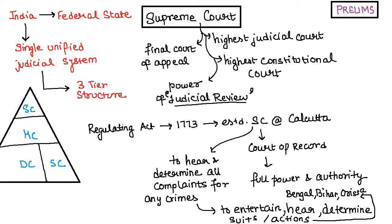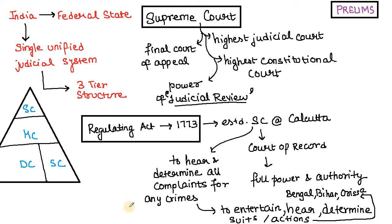When we talk about the historical background of the Supreme Court, the Regulating Act of 1773 was passed and it established the Supreme Court of Judicature at Calcutta as a Court of Record. It was established to hear and determine all suits and actions in Bengal, Bihar, and Orissa — you can use the mnemonic B-O-B to remember: Bengal, Orissa, Bihar.